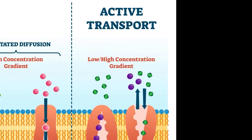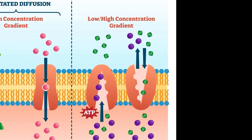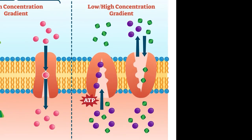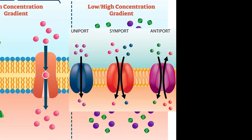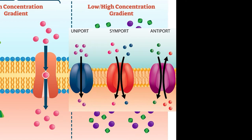By contrast, the mechanisms of active transport require energy to move substances against their concentration gradients. Active transport can be primary when powered by chemical energy stored in ATP, or secondary if powered by the energy stored in an ion gradient. There are three types of active transport proteins — uniporters, symporters, and antiporters — all of which use energy in some form to pump a substance into an area of higher concentration.